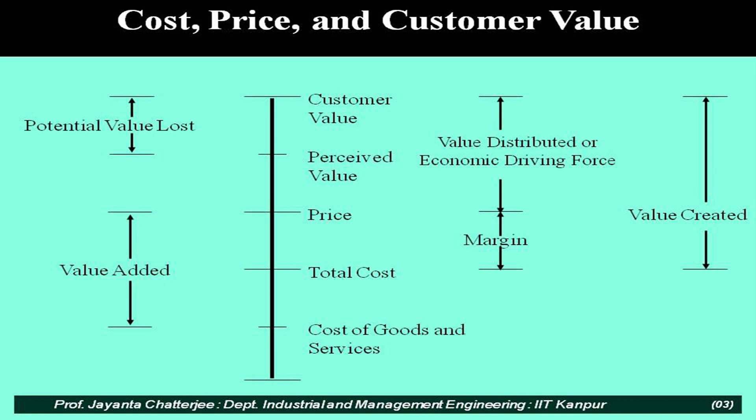Let's look at this chart. Anything that is produced and shipped out of a factory or selling establishment will at the base have this cost of goods and services. Sometimes in a profit and loss statement or financial statements, this will be written as COGS — cost of goods and services. This normally will include the material cost, the labor cost, the overhead cost, including electricity and other inputs that go into the final output.